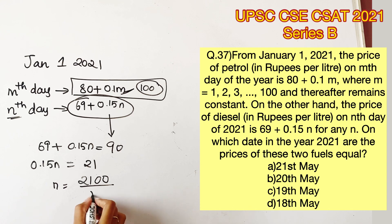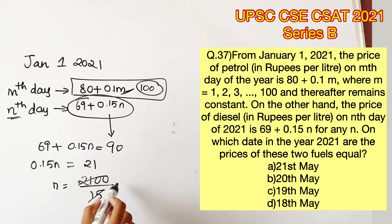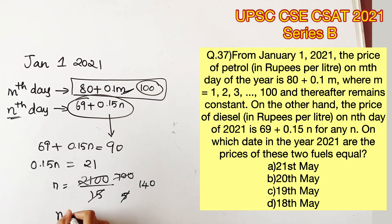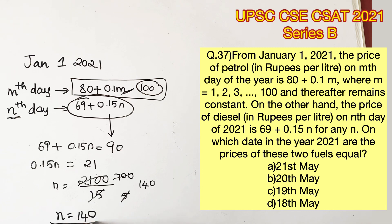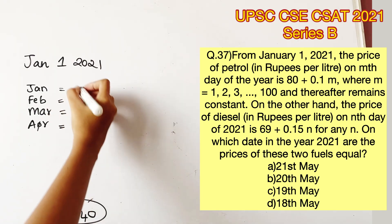Equating: 69 + 0.15n = 90. This gives 0.15n = 90 − 69 = 21. Solving for n: n = 21 ÷ 0.15. Multiplying numerator and denominator by 100 makes it easier: n = 2100 ÷ 15 = 140. So at the 140th day of the year, the price of diesel is also going to be 90.